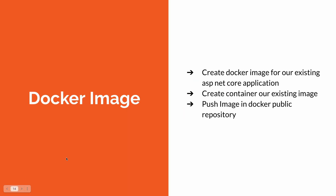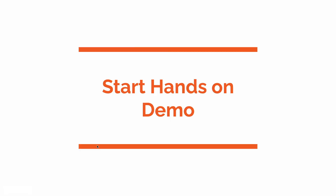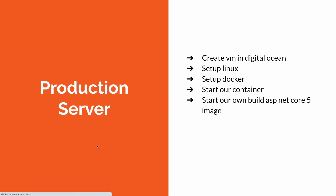Then we create a Docker image for our already developed .NET Core application, and publish it to Docker Hub. After that, we learn how to set up our production server with Docker — how to set up a VM in DigitalOcean, set up Linux, set up Docker, and our container.